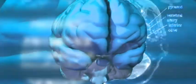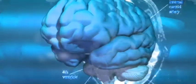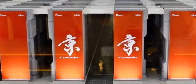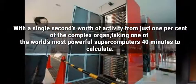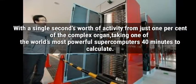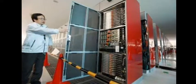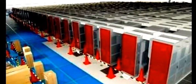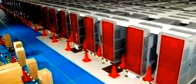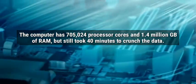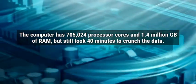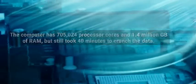The most accurate simulation of the human brain to date has been carried out on a Japanese supercomputer, with a single second's worth of activity from just 1% of the complex organ taking one of the world's most powerful supercomputers 40 minutes to calculate. Researchers used the K computer in Japan to simulate human brain activity. The computer has 705,024 processor cores and 1.4 million GB of RAM, but still took 40 minutes to crunch the data for just one second of brain activity.